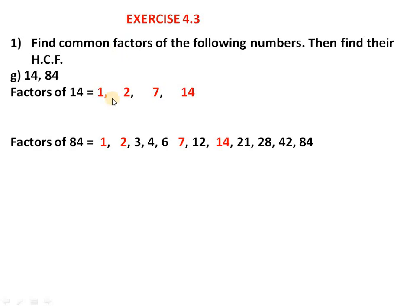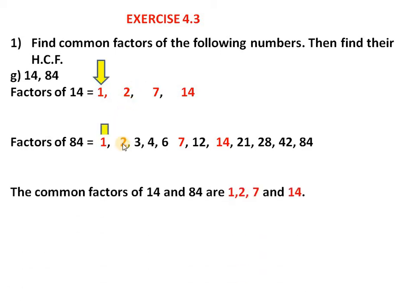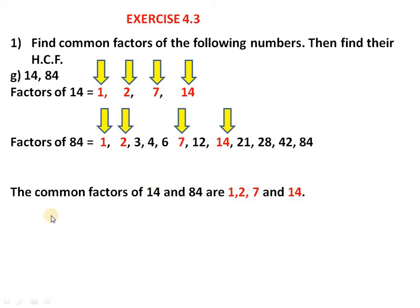Now we find the common factors. 1 is available in both, 2 is also common, 7 is also common, and 14 is also common. Numbers like 3, 4, 6, 12, 21, 28, 42, and 84 are not useful as common factors. So the common factors of 14 and 84 are 1, 2, 7, and 14. The highest is 14, so HCF of 14 and 84 is 14.